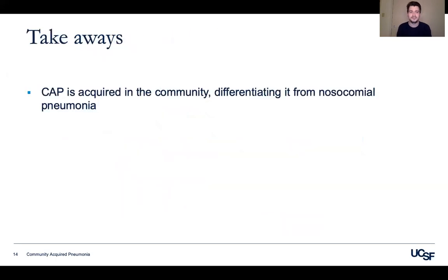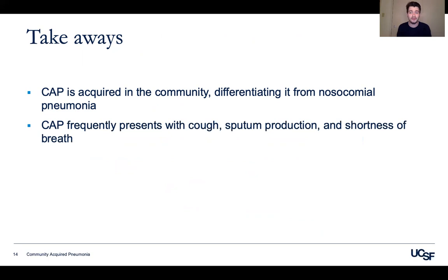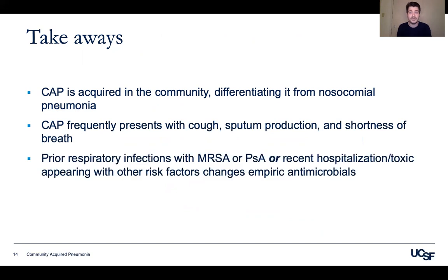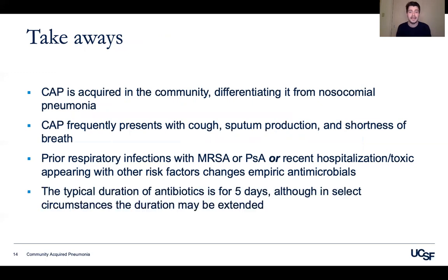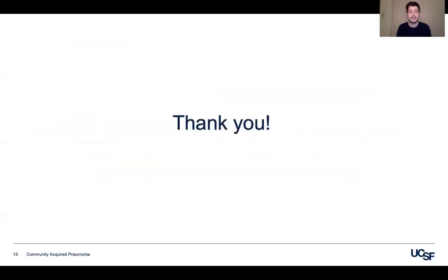Some takeaways: CAP is acquired in the community, differentiating it from nosocomial pneumonia. CAP frequently presents with cough, sputum production, and shortness of breath, although in older patients these features can be absent. Prior respiratory infections with MRSA or pseudomonas, recent hospitalization, or a very sick patient with risk factors should change your thinking about empiric antimicrobials. The typical antibiotic duration is five days, though it may be extended in select circumstances. Thank you to all of the doctors helping to take care of those in need — I hope this talk is a small contribution to your efforts.